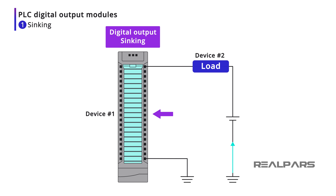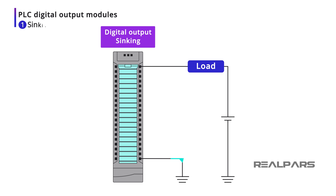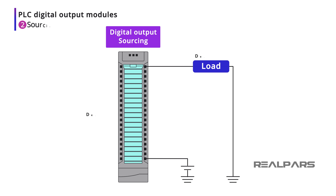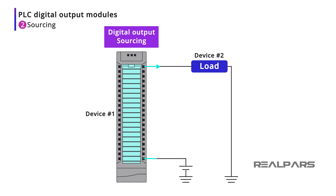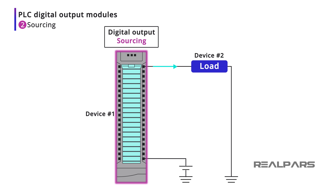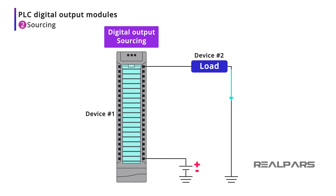Let's have a look at two devices with current flowing between them. One device is a PLC output module, and the second device is a relay. Based on the connection polarity, the sinking module will have the current flowing into it from the load. Now let's do that again, but this time one of our devices will be a sourcing module. Based on the connection polarity, the sourcing module will have the current flowing out of it and into the load.